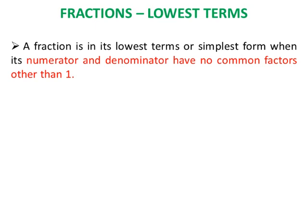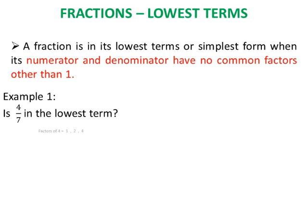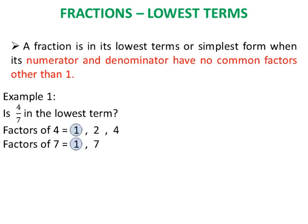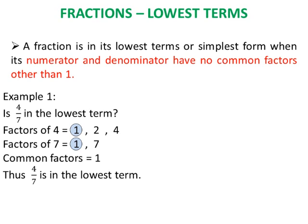Fractions in lowest terms: a fraction is in its lowest terms or simplest form when its numerator and denominator have no common factors other than 1. Let us look at a few examples. Example 1: Is 4 upon 7 in its lowest term? First, let us find the factors of 4 and 7. Factors of 4 are 1, 2, and 4. Factors of 7 are 1 and 7. The only common factor of 4 and 7 is 1.